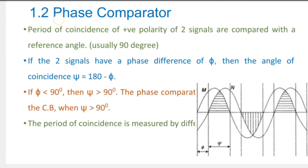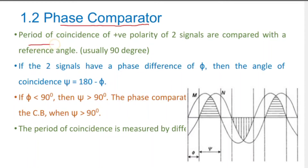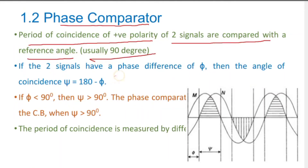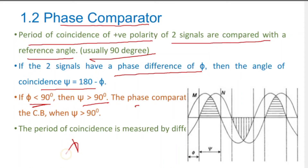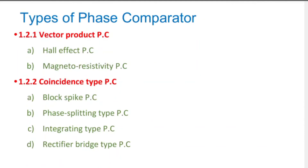The phase comparator compares the phase of two signals. The period of coincidence of positive polarity of two signals is compared with a reference, usually 90 degrees. When two signals have a phase difference of phi, the angle of coincidence psi is 180 minus phi. If phi is less than 90 degrees then psi is greater than 90 degrees, and the relay operates. If lambda or psi is less than 90 degrees, the relay will operate. The base circuits of phase comparators use bridge rectifiers.